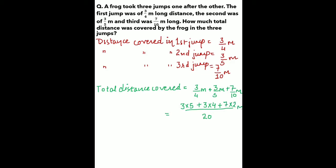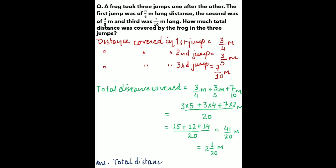Now solve it: 3 into 5 is 15, plus 3 into 4 is 12, plus 7 into 2 is 14, upon 20. Which equals 41 upon 20 meter. Convert it into a mixed fraction — it will be 2 whole 1 upon 20 meter. So the answer is: total distance covered equals 2 whole 1 upon 20 meter.